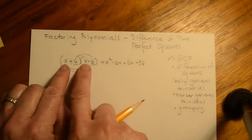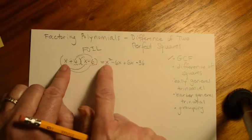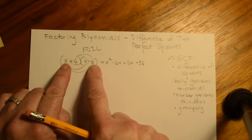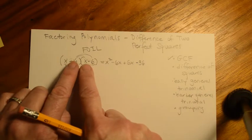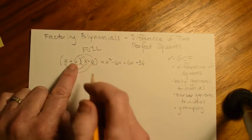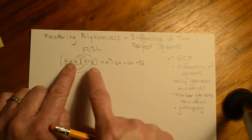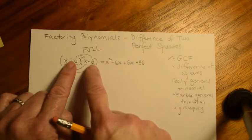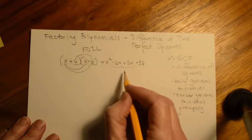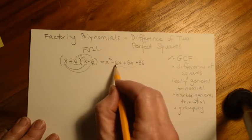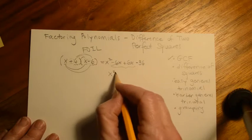Using FOIL: we do the first — that gives us x squared; the outer — x times negative 6 gives negative 6x; the inner — positive 6 times x gives positive 6x; and the last — positive 6 times negative 6 gives negative 36. When we clean up, these two middle terms cancel out because we have negative 6x and positive 6x, and we're just left with x squared minus 36.